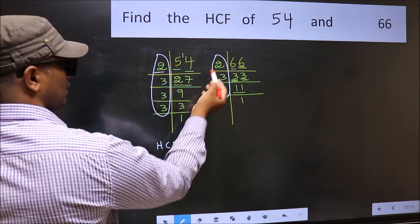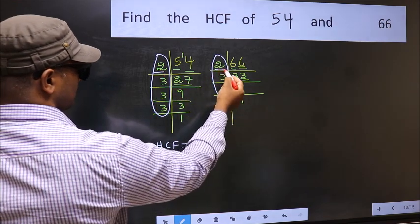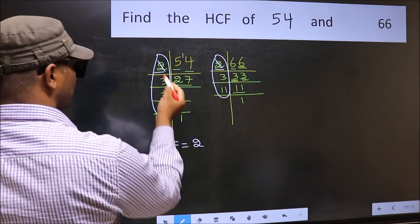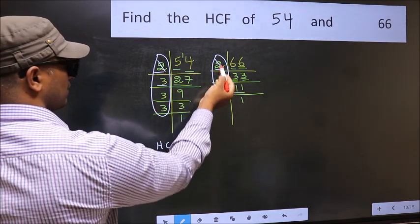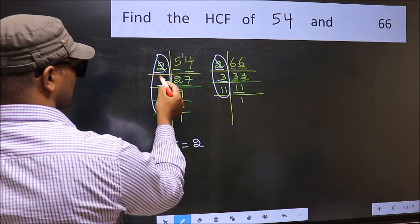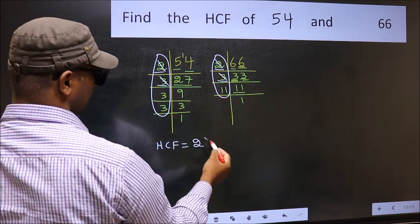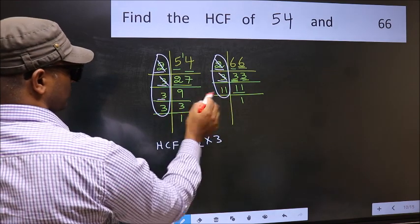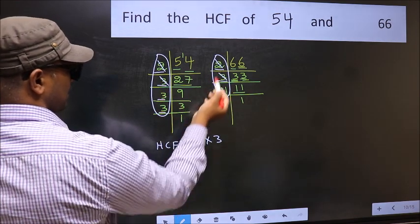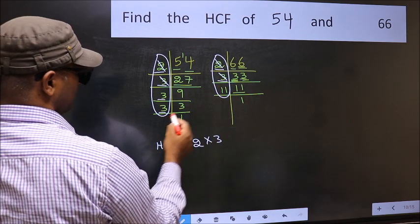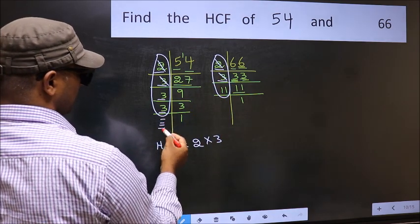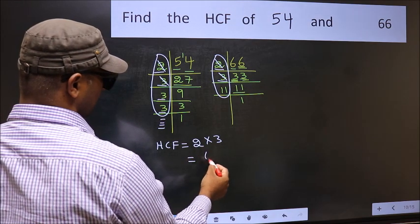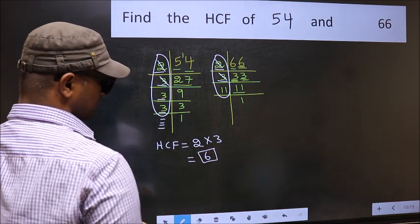Starting with the number 2, do we have 2 here? Yes, so cut 2 right here. Next number 3, do we have 3 here? Yes, so cut 3 right here. Next number 3, do we have 3 here? No. Next number 3, do we have 3 here? No. No more numbers have been left out. So our HCF is 2 times 3, 6 is our HCF.